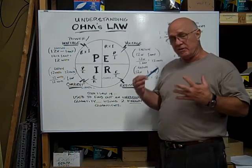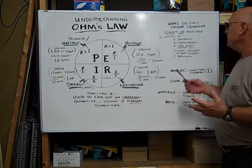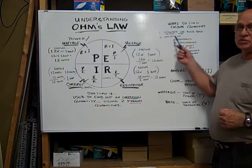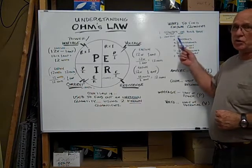Now, to find out the known quantities, you can look on the base of the bulb and usually it's stamped with the voltage and amperage. That gives you two known quantities.